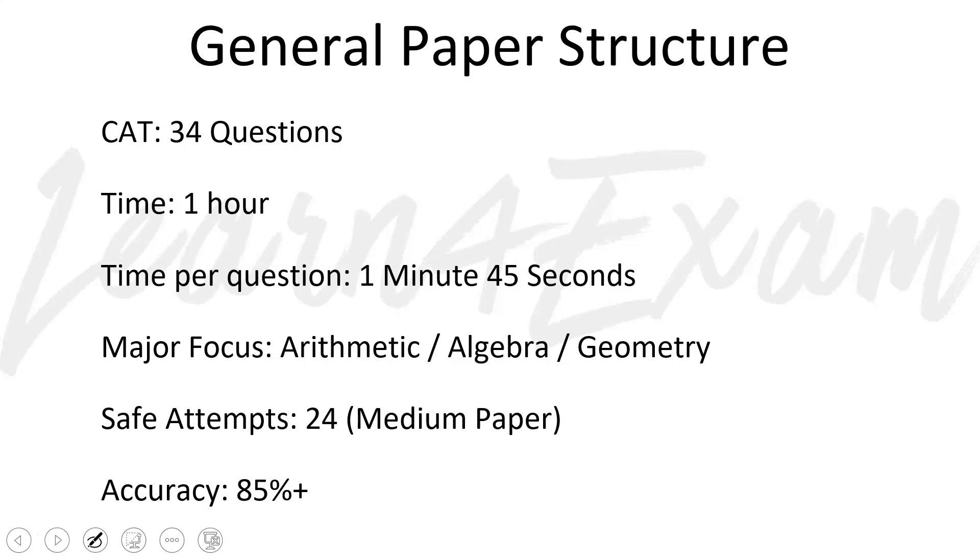Let me talk about the paper first. General paper structure is you have 34 questions and you have one hour, so the time per question would be one minute 45 seconds for attempting all 34 questions. Major focus is arithmetic, around 40 percent of the questions would be from arithmetic, and then you have algebra and geometry. Safe attempts would be somewhere around 24 for a medium level of difficulty paper. Accuracy should be somewhere around 85 percent. So if you attempt 24 with accuracy of 85 percent, the total number of correct would be 20, total incorrect would be 4, so you would get a score of 56. 56 is a good score for a medium paper.